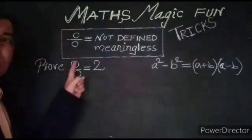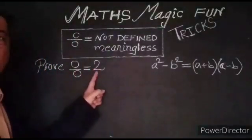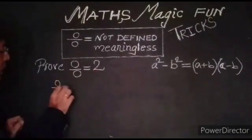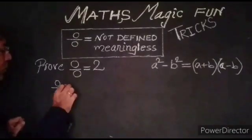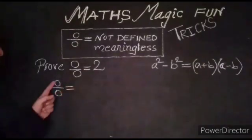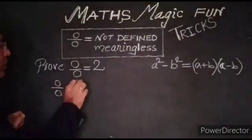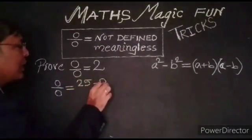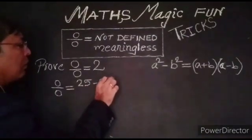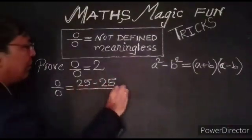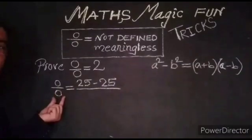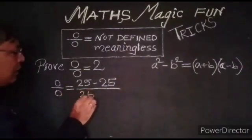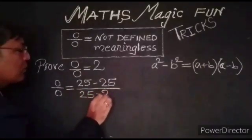Prove that 0 upon 0 is equal to 2. We start with 0 upon 0. Instead of 0 in the numerator, I will write 25 minus 25. In the denominator, instead of 0, I will write 25 minus 25.